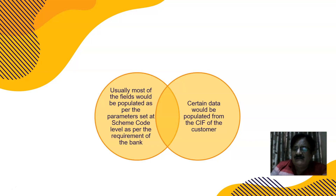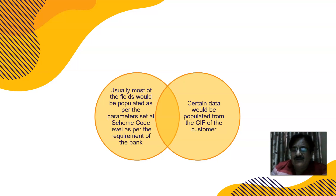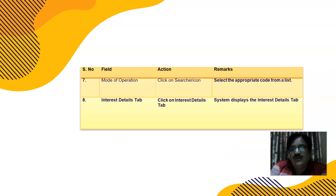Certain data is populated from the customer's KIFF — address details, KYC documents, ID proof, address proof, mobile number, email ID, and registered address. For a corporate KIFF ID, choose the registered address as the preferred address type. For Mode of Operation, go to the searcher — joint, either of two, or either of three — depending on the mandate given, along with a board resolution for opening the account.